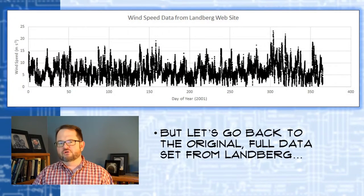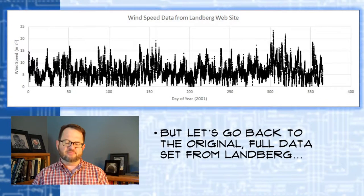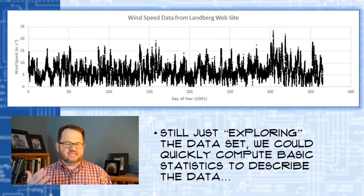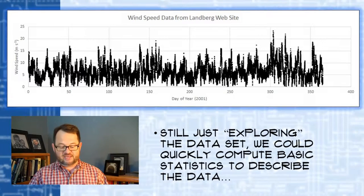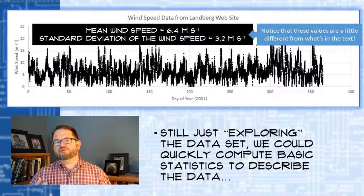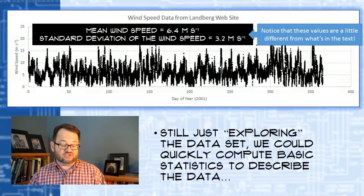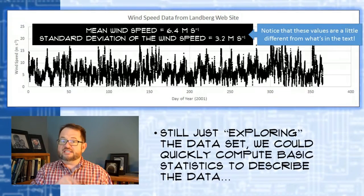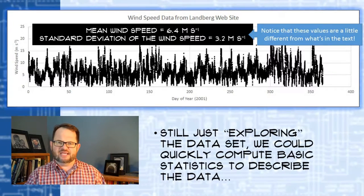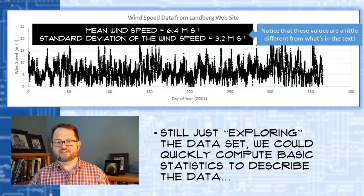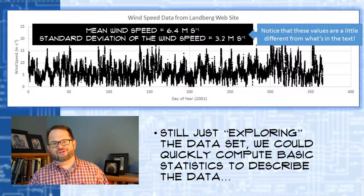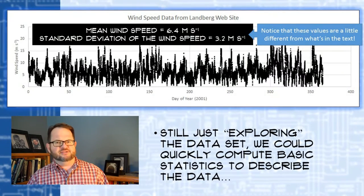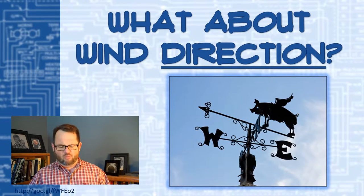Looking at the actual full data archive from the Landberg website, if we're still just exploring the data and not yet making decisions about wind distribution, there are basic statistics we could compute — like the mean wind speed or the standard deviation, which describes the scatter of observations around the mean. I did that easily in Excel. You'll notice these values are slightly different from your textbook's because the textbook only worked with the first 90 days, whereas I'm working with the full 365 — my numbers are close but a little off. Those kinds of statistics are straightforward to compute.